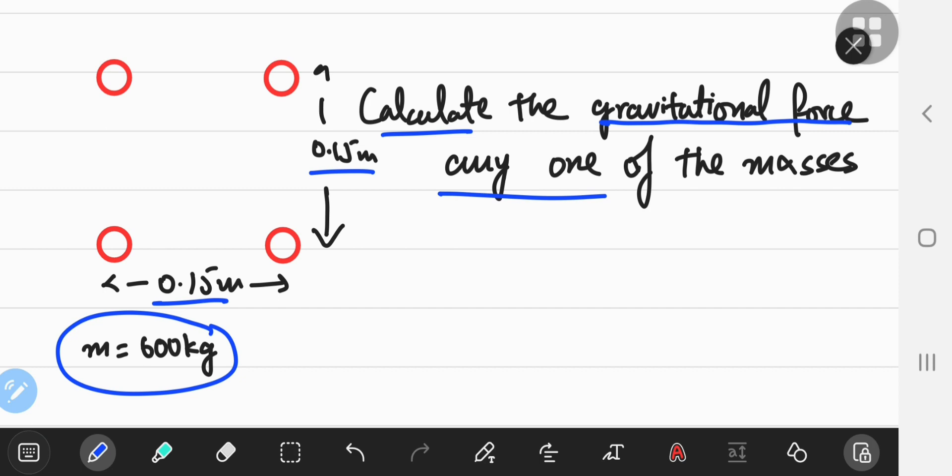So I have to pick any one of these four. I'm going to label them as 1, 2, 3, 4. I pick any one of these masses and I calculate the total gravitational force exerted on one mass by the other masses.